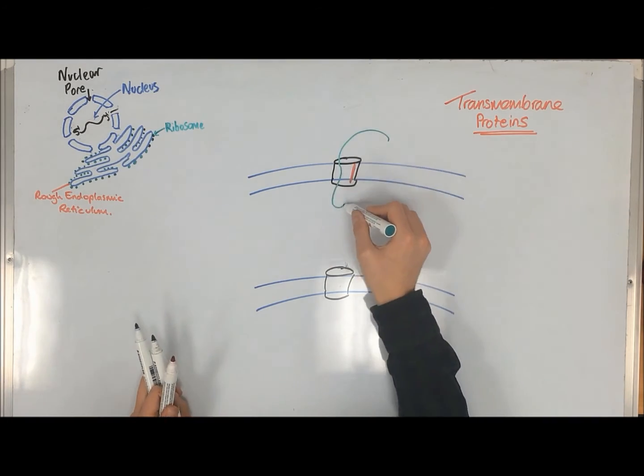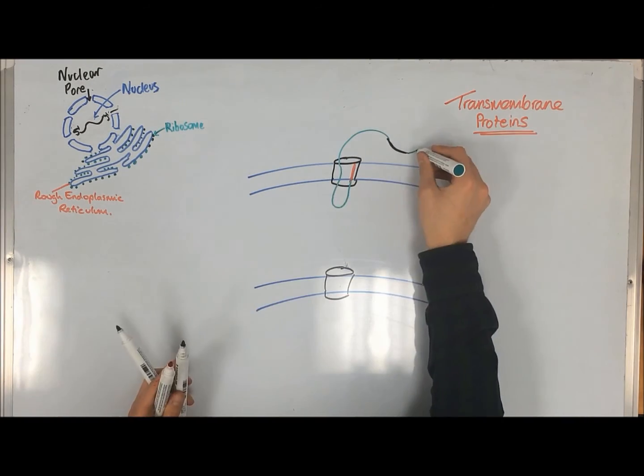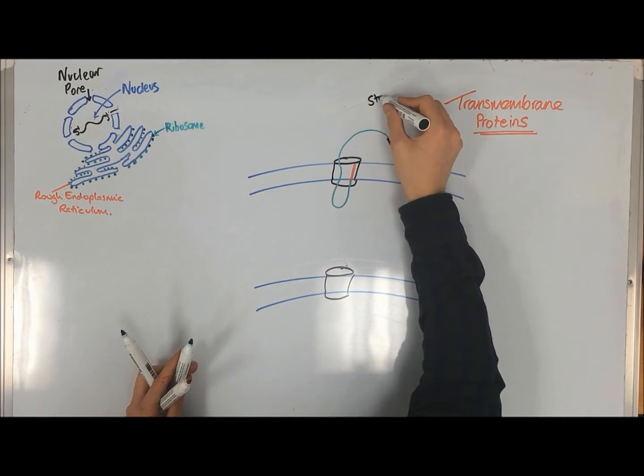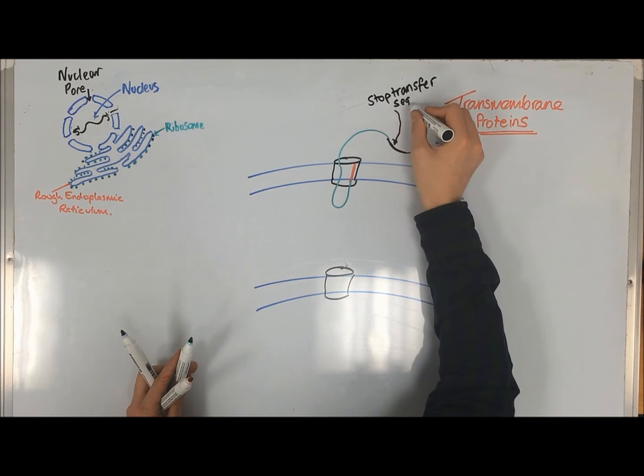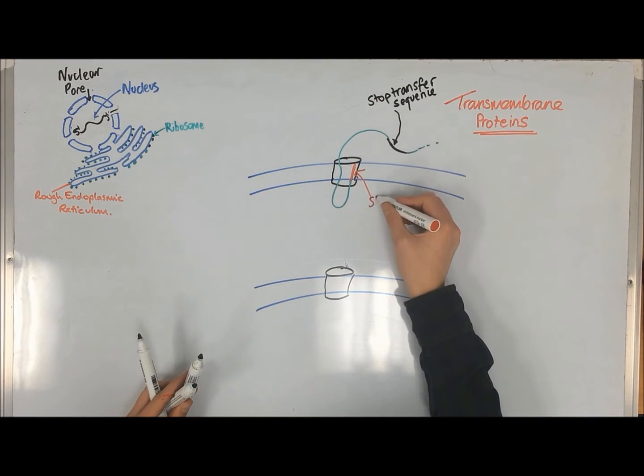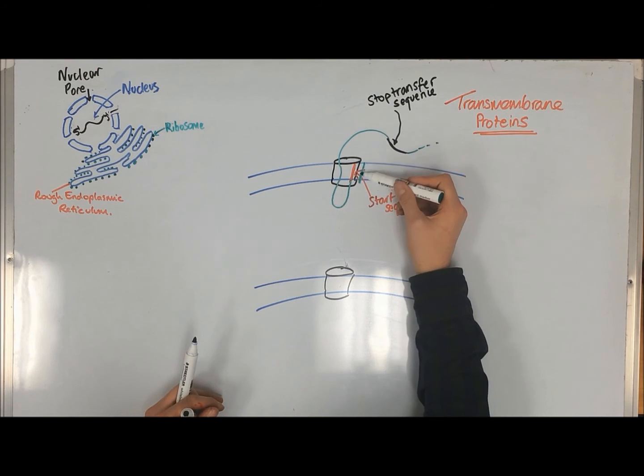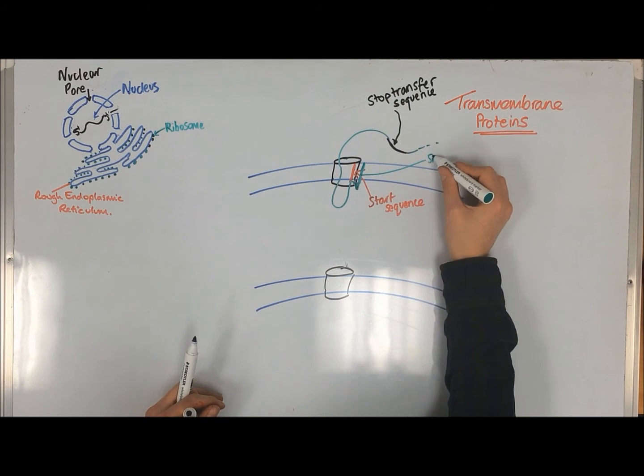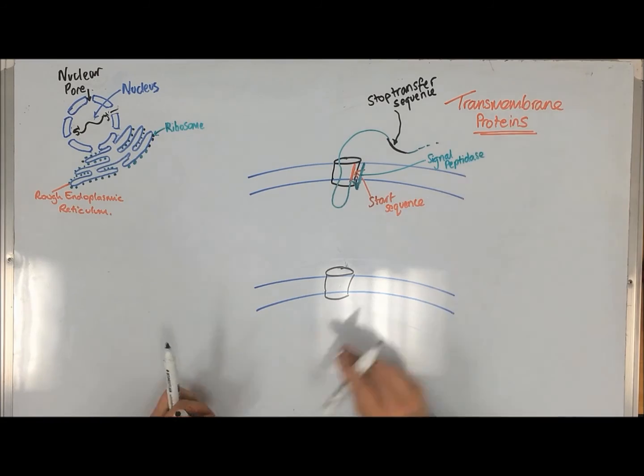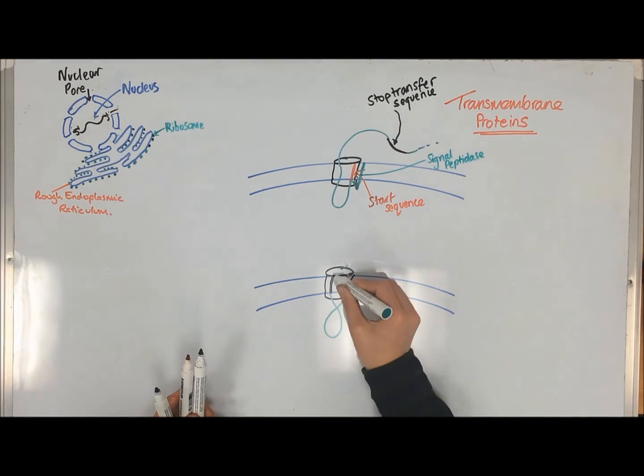When the peptide sequence goes through the translocation channel, it meets an additional sequence of hydrophobic amino acids called the stop-transfer sequence. This remains in the channel and stops the movement of the peptide. The stop-transfer sequence is released laterally into the bilayer by the cleavage of the signal sequence by signal peptidase. The result of this is a transmembrane protein being formed.